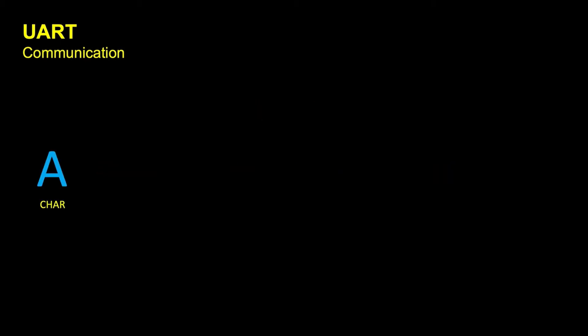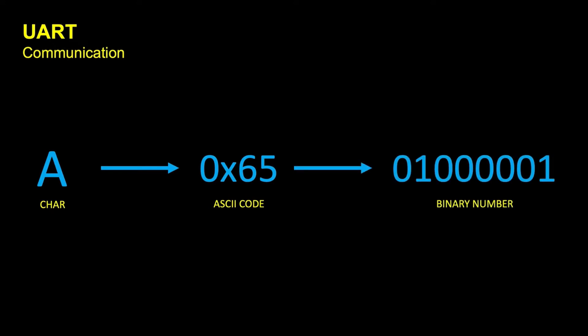Let's say for example that we want to send a simple character — in this case capital A. Any character can be sent using 8 bits. The first thing we want to look at is the ASCII code of this character, which is 65, but we don't send hex — we send binary, so we convert this to a binary number.